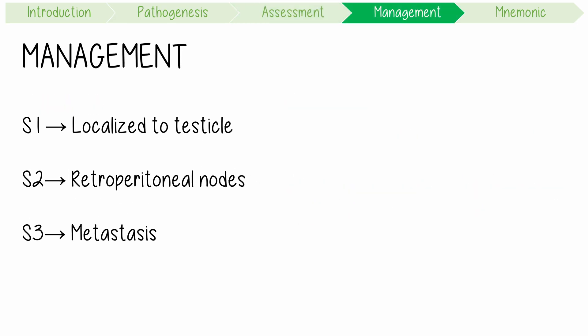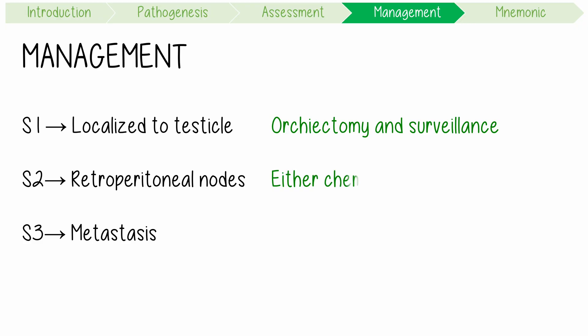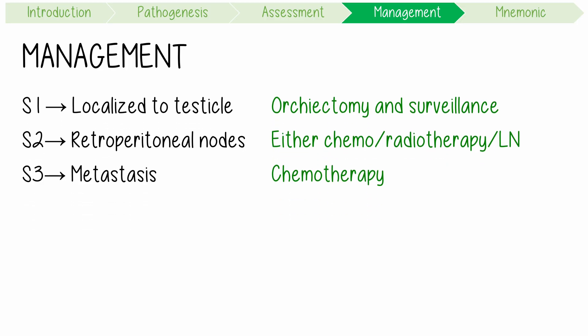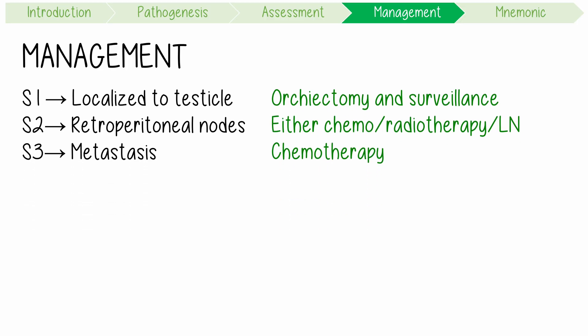Management is based on stage. S1 usually involves orchidectomy and surveillance. S2 usually involves chemotherapy, radiotherapy, or resection of retroperitoneal lymph nodes. S3 requires chemotherapy, as of a 2025 JAMA review.